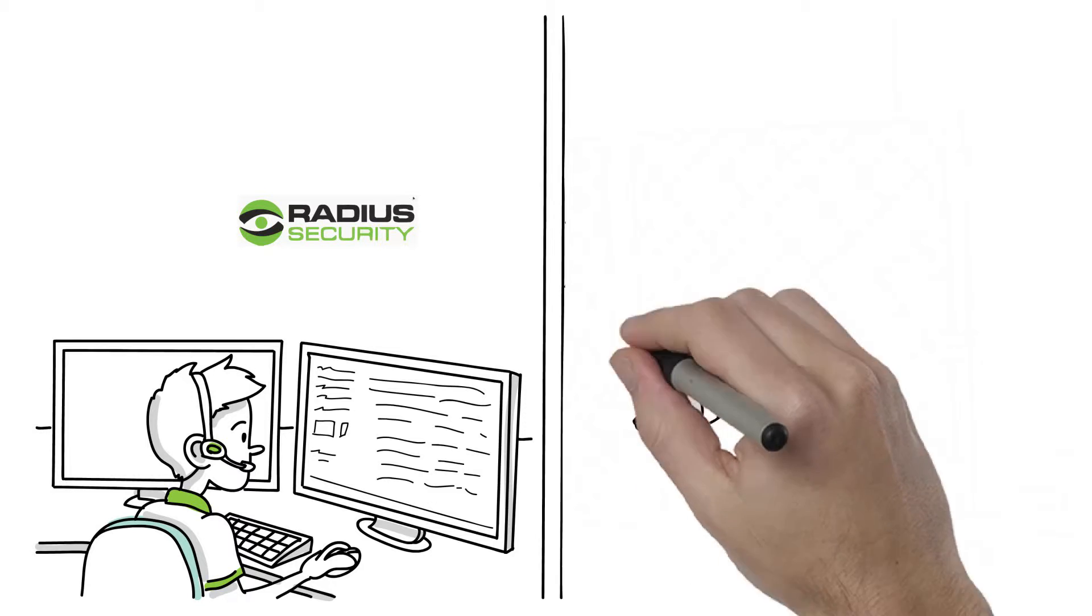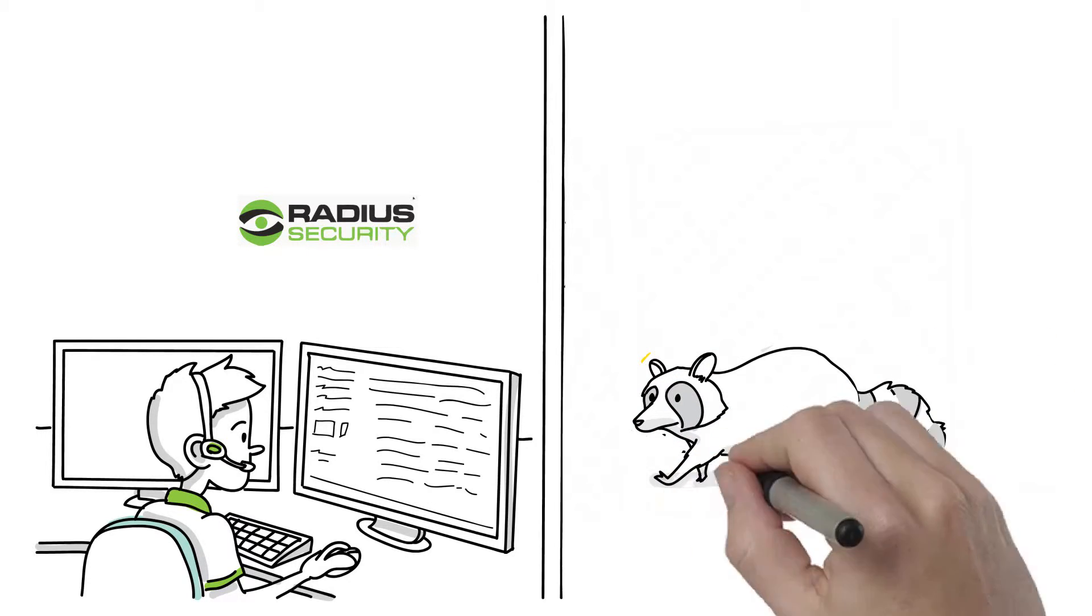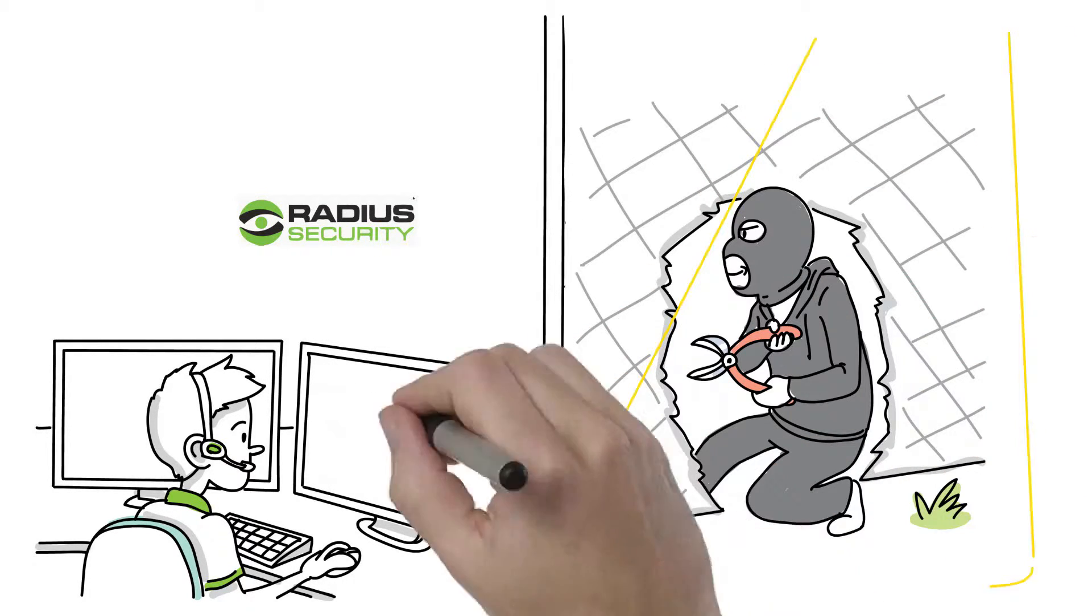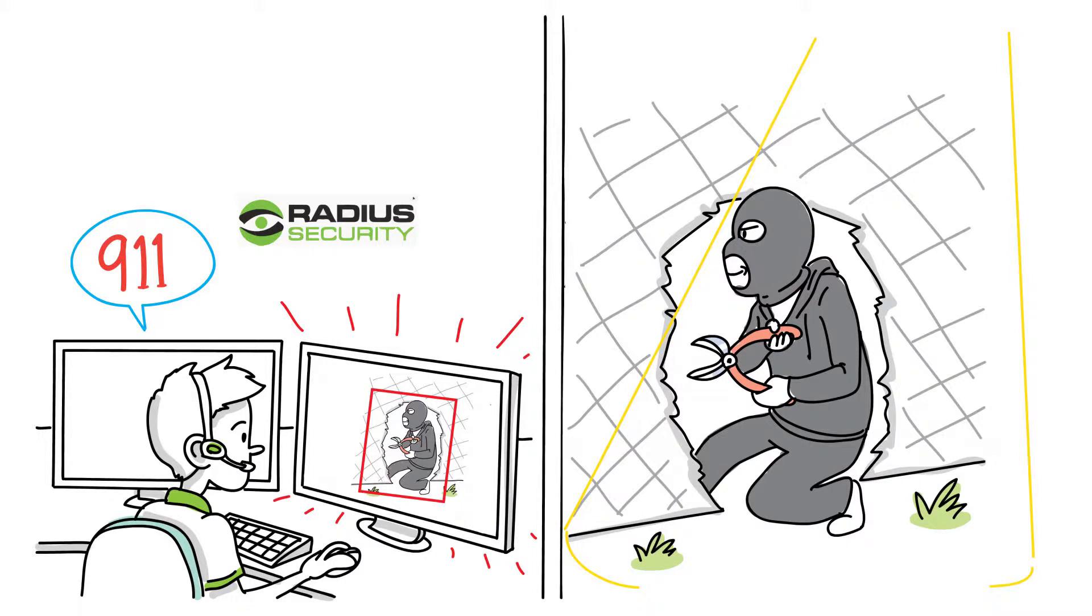The system can tell the difference between a flapping banner, heavy rain, a raccoon, car, or a human being. The software filters out the false alarms and only sends suspicious behavior alarms to the operator.